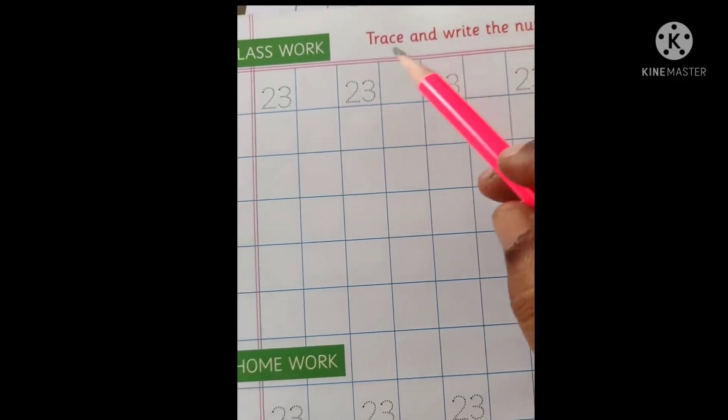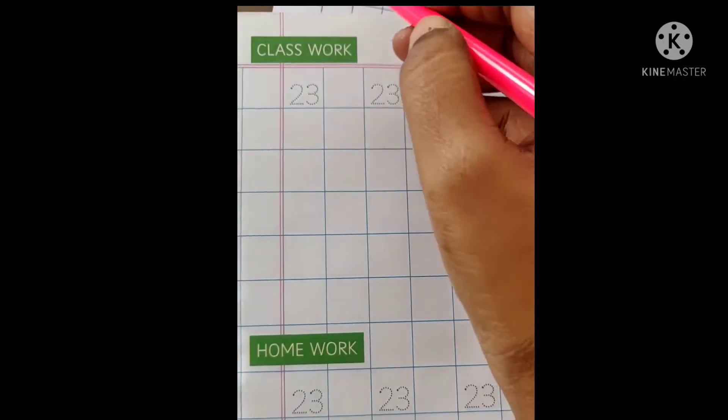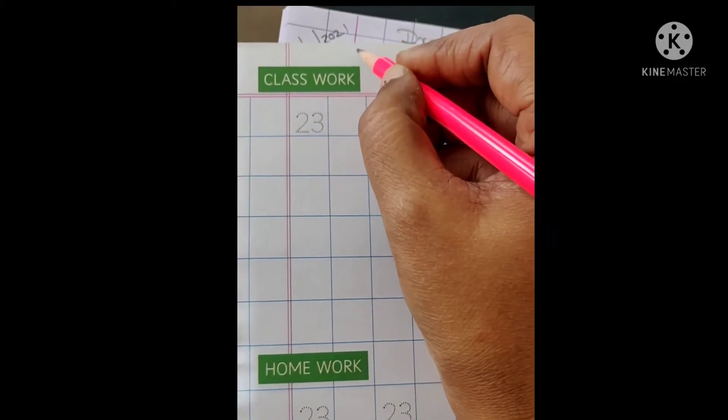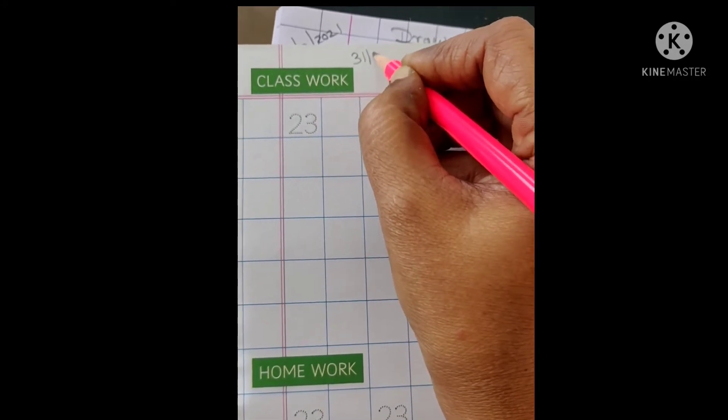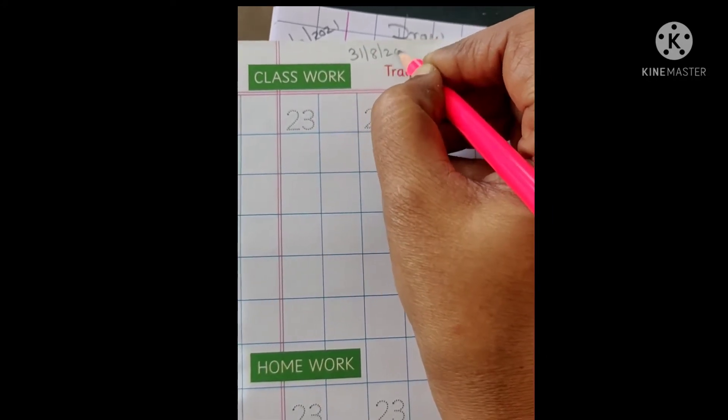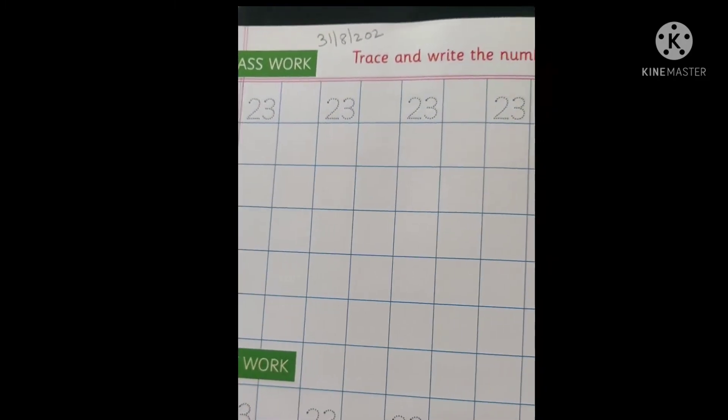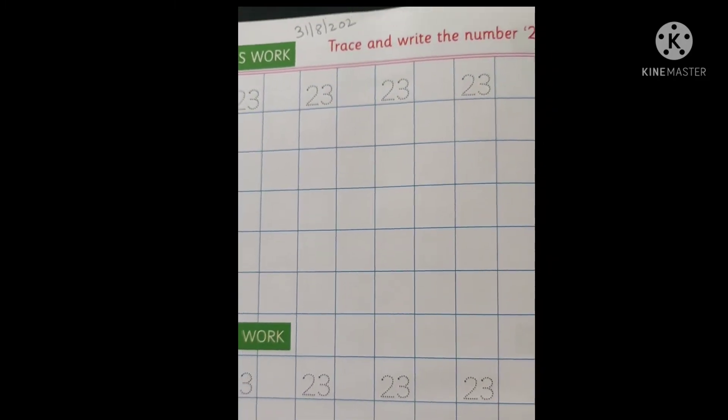Okay, now here is 23. Before beginning, you have to just write the date, that is 31-8-2021. Okay children, all finished writing? Yes.